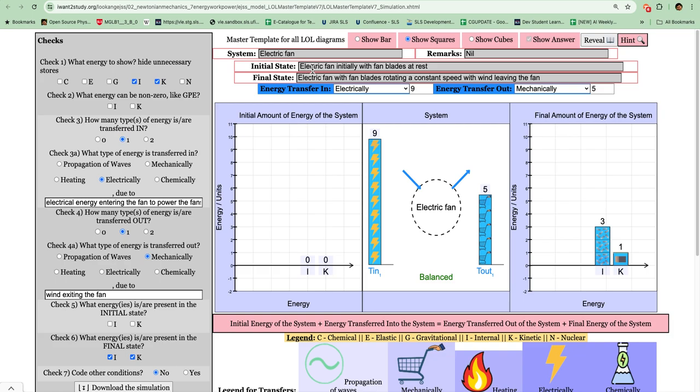So let's say we want to model using the AOL that the electrical fan is initially at rest. Okay, so there should be no energies in either the internal or the kinetic store because the blades are not rotating.